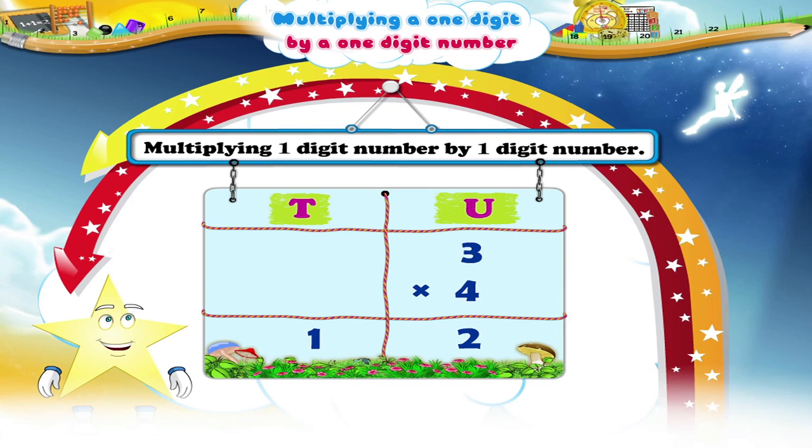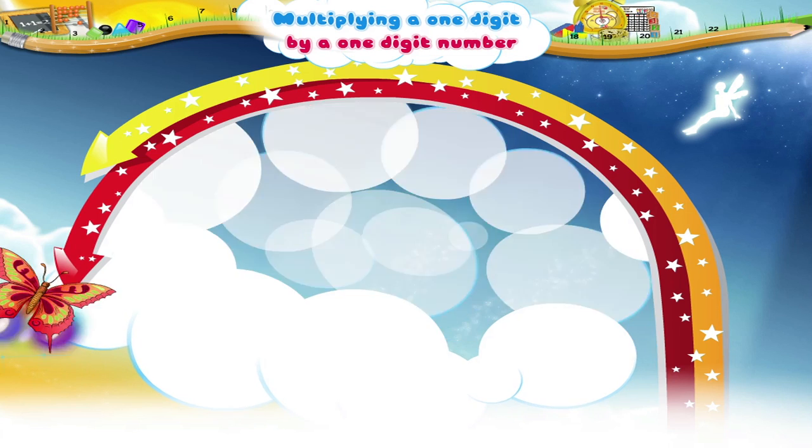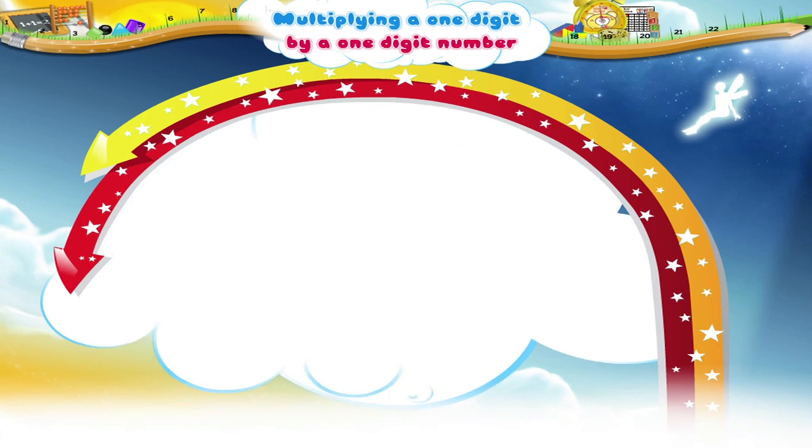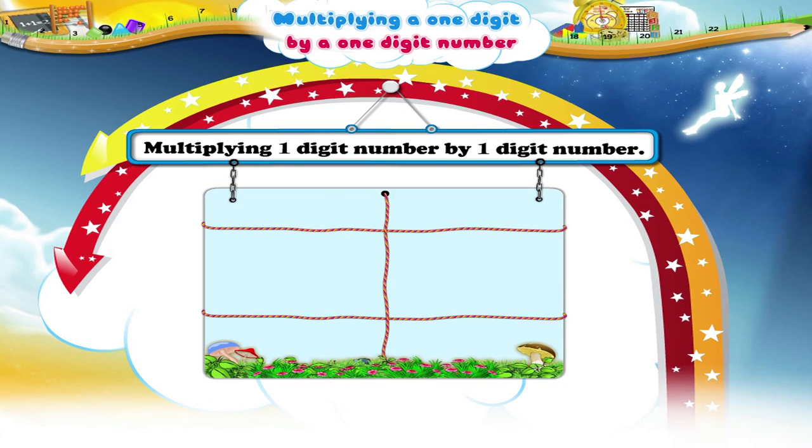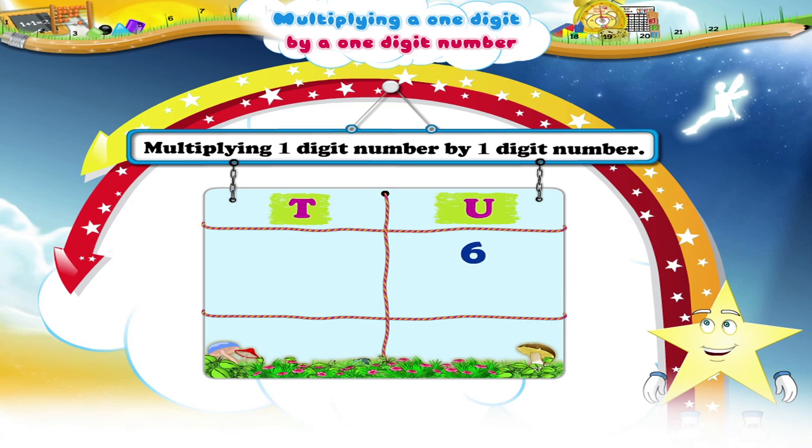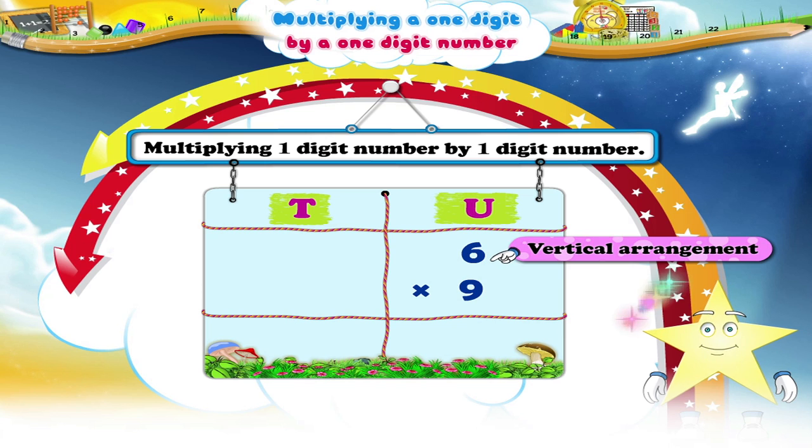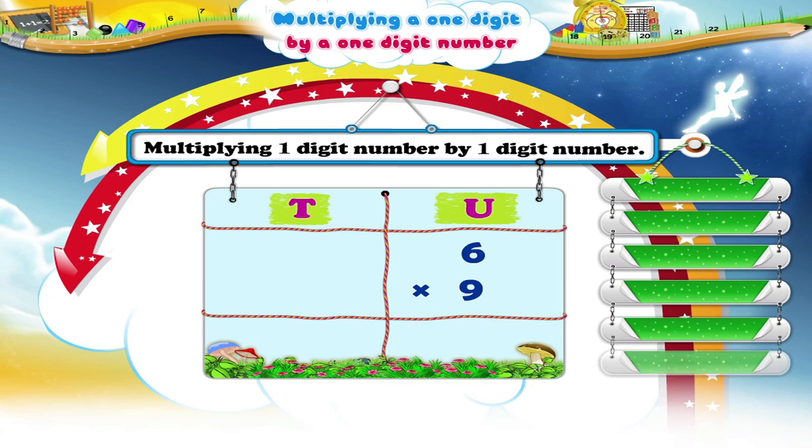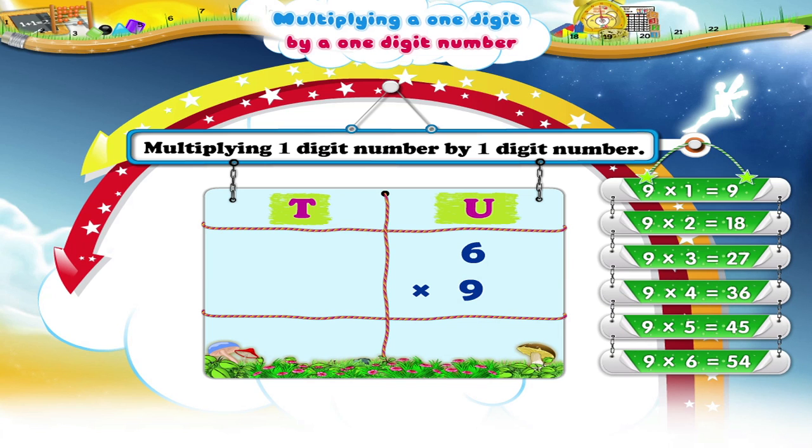Wasn't that easy Starry? Now let's try another set of one-digit numbers. Let us multiply six by nine. We will now say the nine times table up to nine sixes. So nine sixes are fifty-four. The product is fifty-four. We write four in the units place and five in the tenth place.